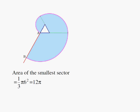So all we need to do is find the area of the smallest sector next. Area of the smallest sector here. This one is one third pi r squared. R happens to be 6. 6 squared is 36. You do the math. You get 12 pi.